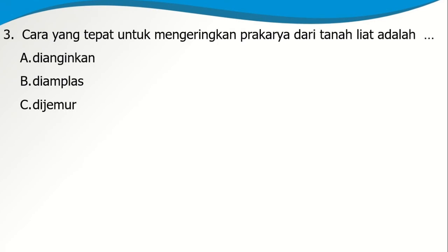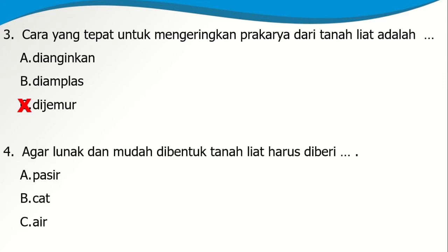Soal nomor 3: Cara yang tepat untuk mengeringkan prakarya dari tanah liat adalah A. Dianginkan, B. Diamplas, atau C. Dijemur. Ya, untuk mengeringkannya kita jemur, jawabnya dijemur. Soal nomor 4: Agar lunak dan mudah dibentuk, tanah liat harus diberi A. Pasir, B. Cat, atau C. Air. Ya, untuk mudah dibentuk harus diberi air. Tapi tidak boleh terlalu banyak, karena kalau terlalu encer tidak akan mudah dibentuk.